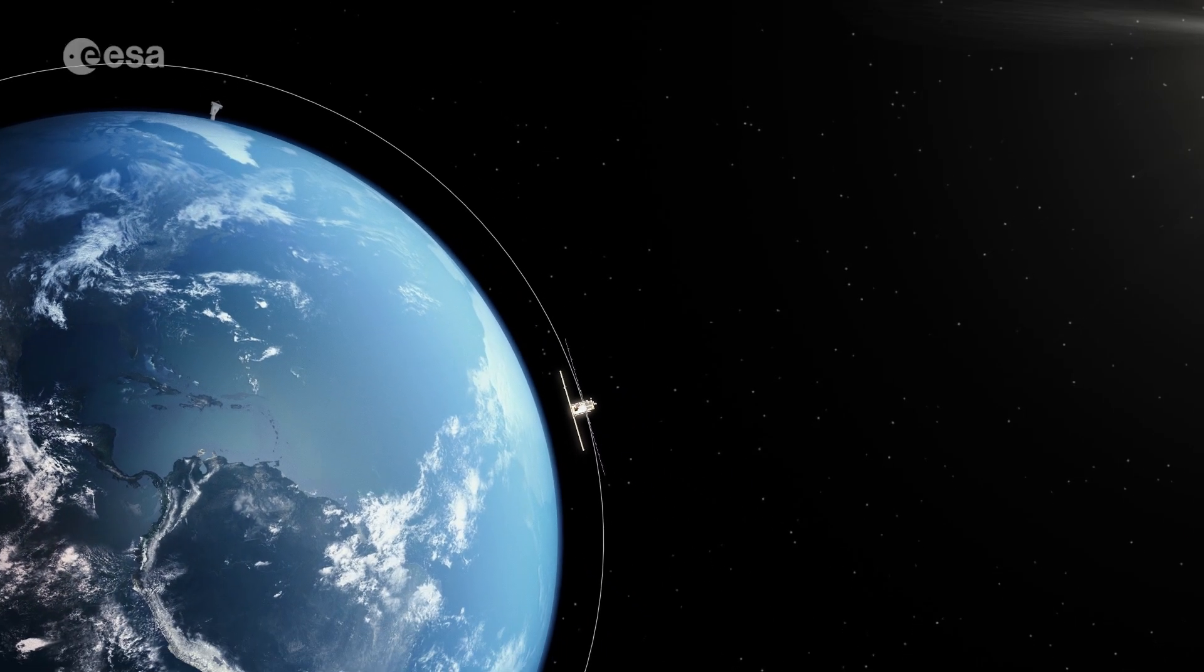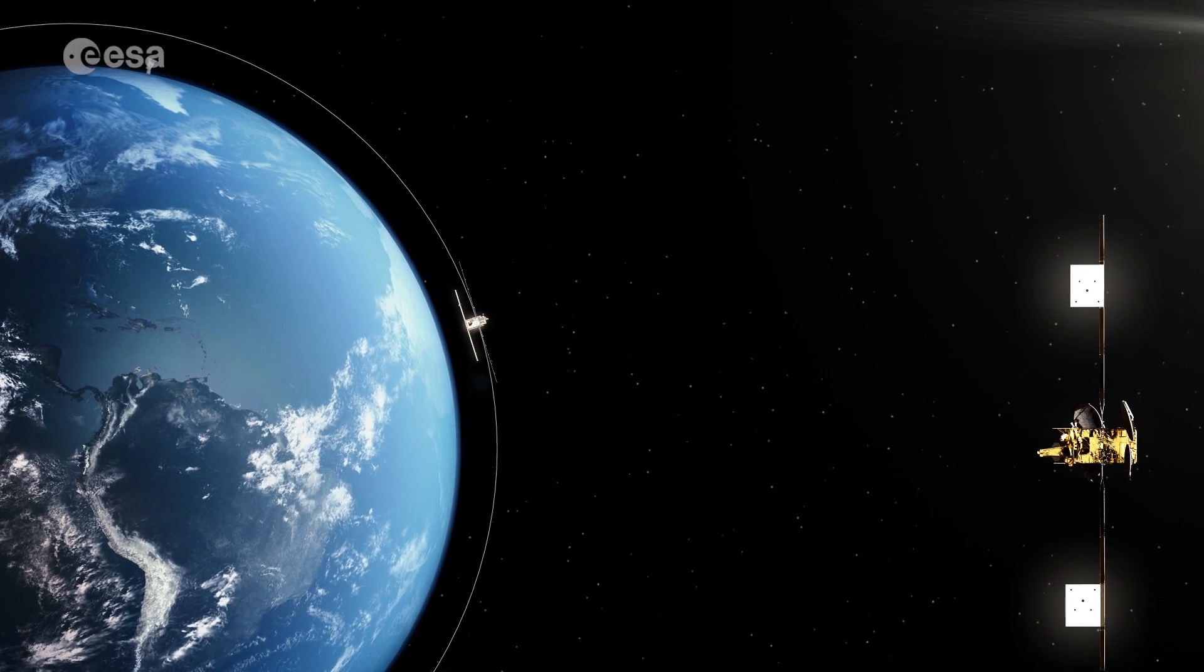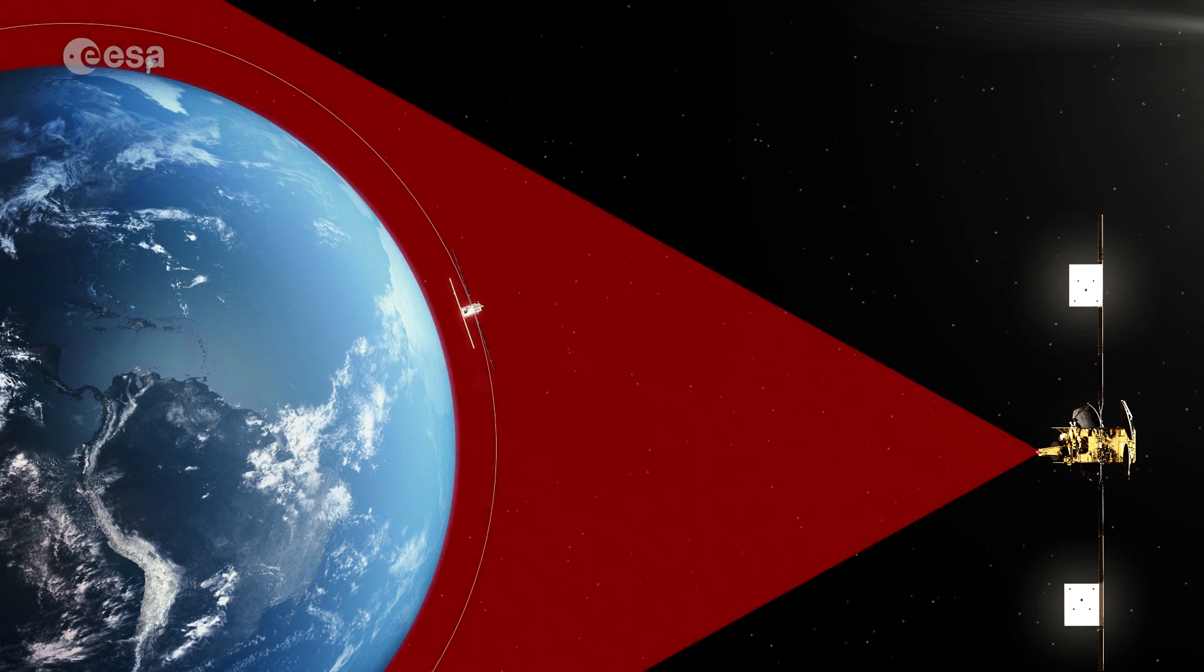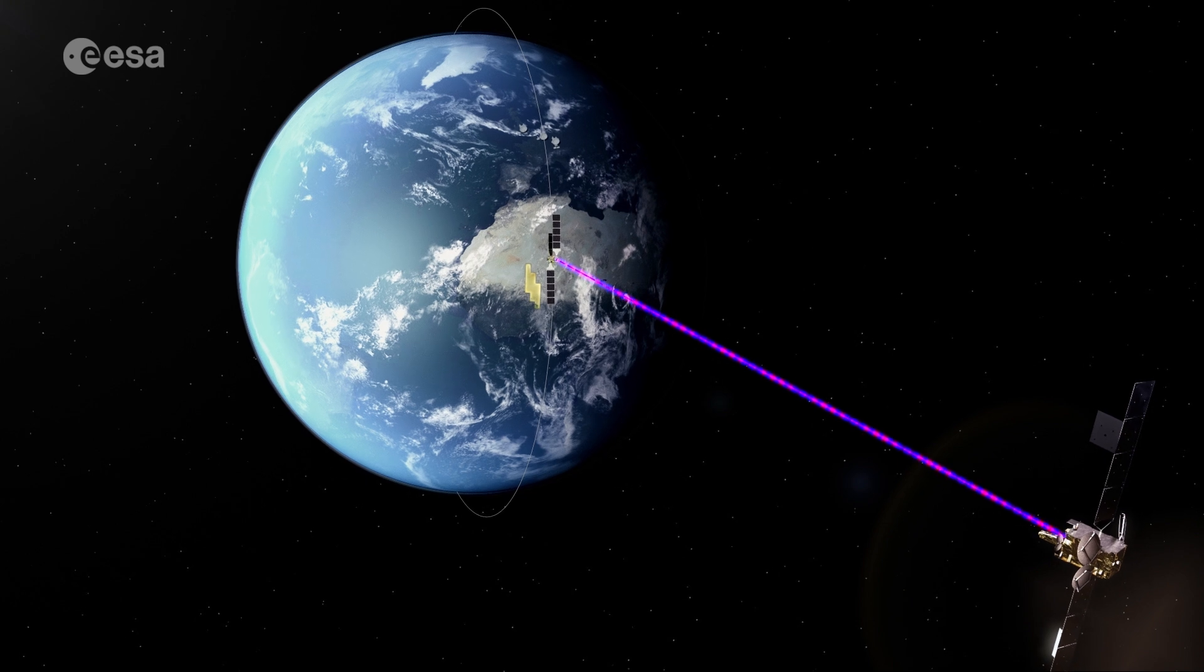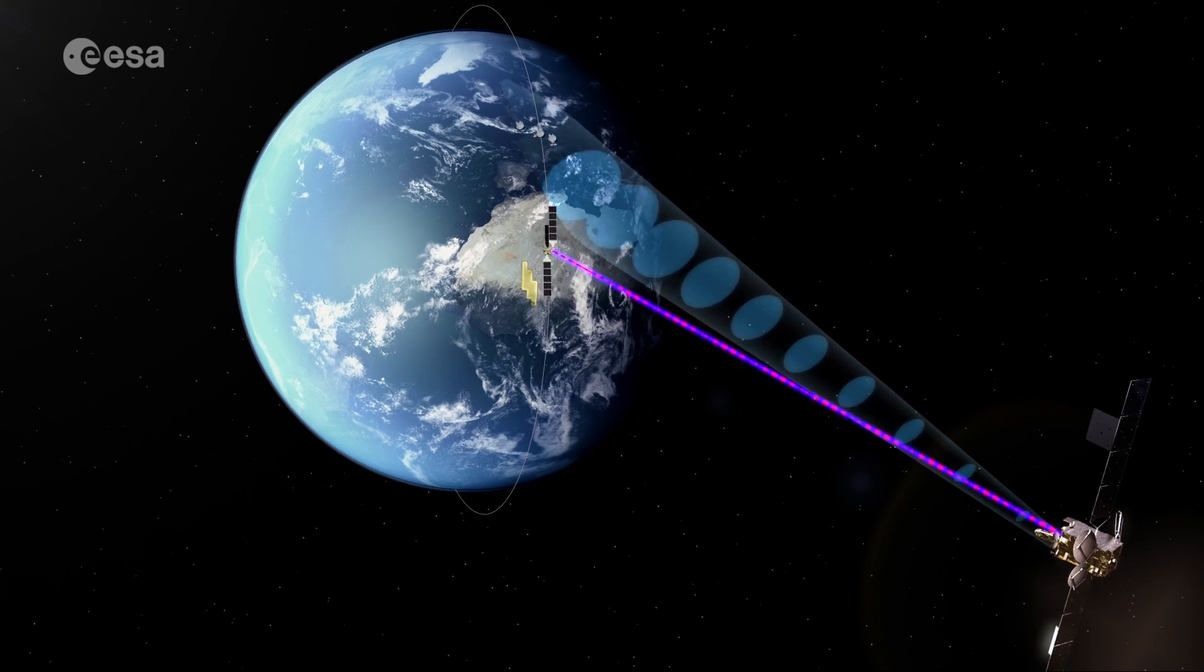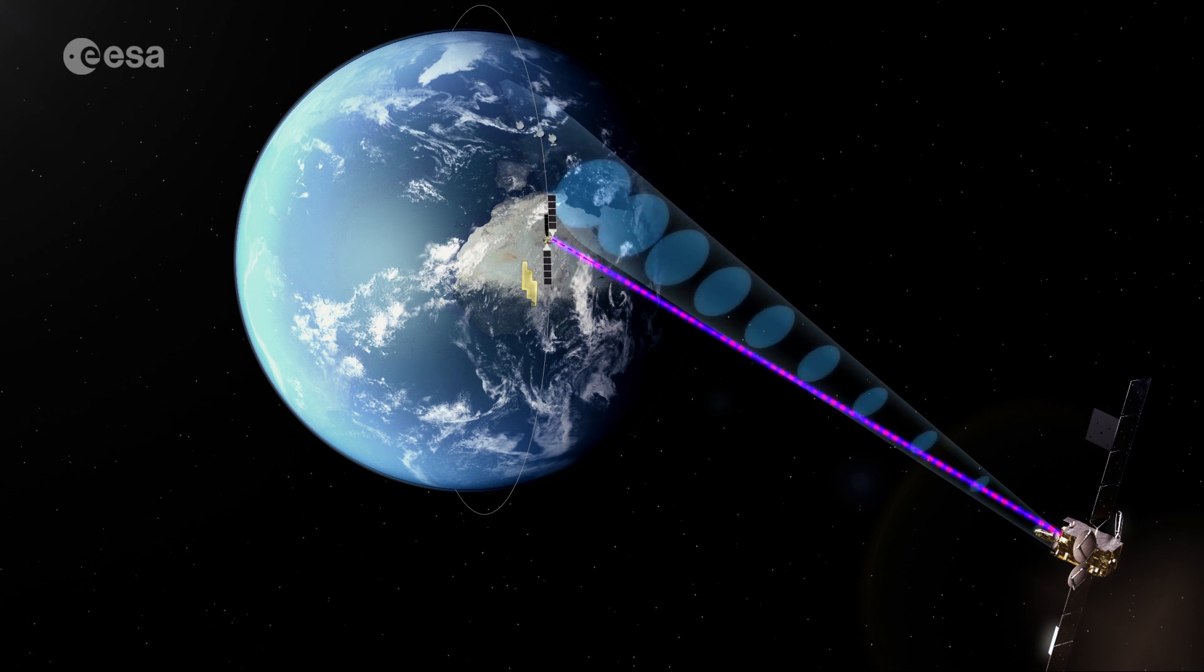The European Data Relay System solves this problem by intercepting the LEO satellite's data from its position in geostationary orbit, permanently holding its position over the EDRS ground stations and remaining in contact at all times, ensuring the right information reaches the right user at the right time.